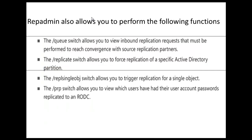The RepAdmin command line includes the following additional functionalities: the /queue switch, which allows you to view inbound replication requests; the /replicate switch, which allows you to force replication of a specific Active Directory partition; the RepSingleObject switch, which allows you to trigger replication for a single object; and the /prp switch, which allows you to view which users have had their accounts replicated to a read-only domain controller.